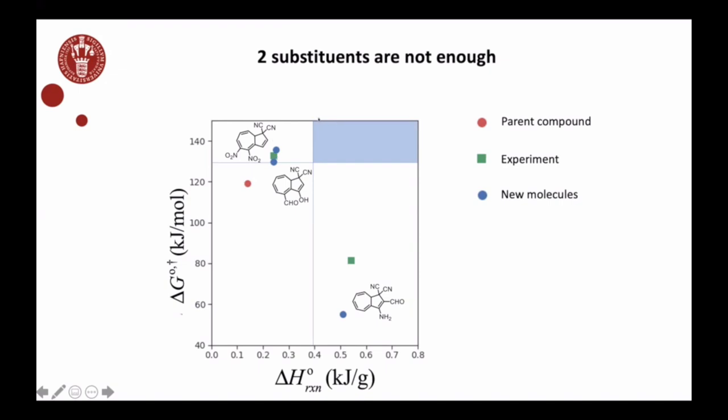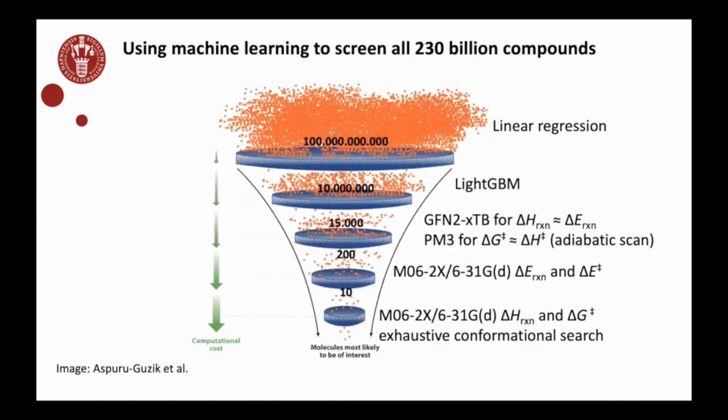We moved a little bit away from the parent compound towards this region here, but there aren't really any super good candidates with two substituents. I should emphasize here that we've tried all combinations now, so it's really an exhaustive search, and there just aren't any promising candidates with the substituents that we chose.